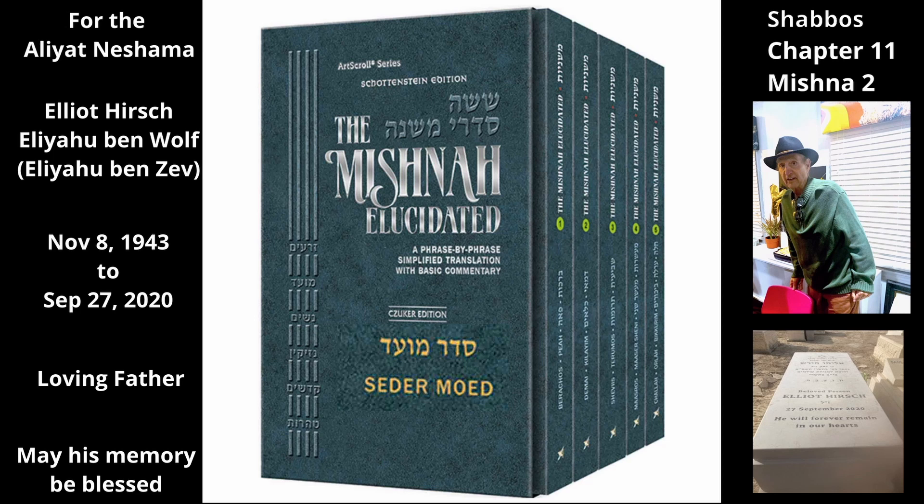The Mishnah returns to the subject of transfers between a private domain and a public domain. The earth removed from a pit and piled around its edges like a wall, and a rock that are ten tefachim high and four tefachim wide are deemed private domains.